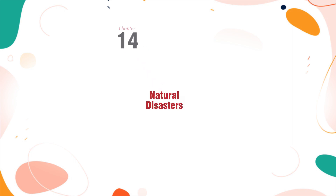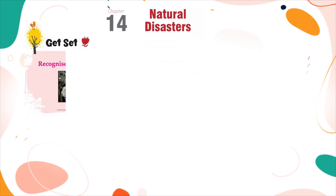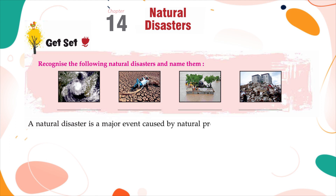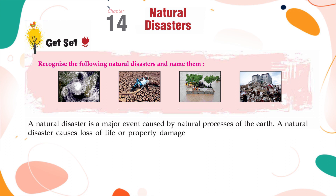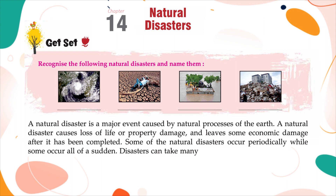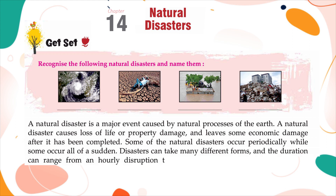Chapter 14: Natural Disasters. Recognize the following natural disasters and name them. A natural disaster is a major event caused by natural processes of the earth. It causes loss of life or property damage and leaves some economic damage after it has been completed. Some natural disasters occur periodically while some occur all of a sudden. Disasters can take many different forms and the duration can range from a brief disruption to days or weeks of ongoing destruction.